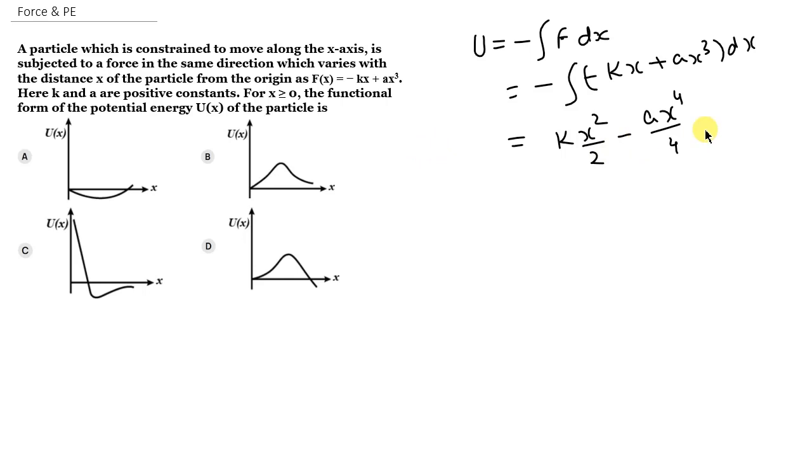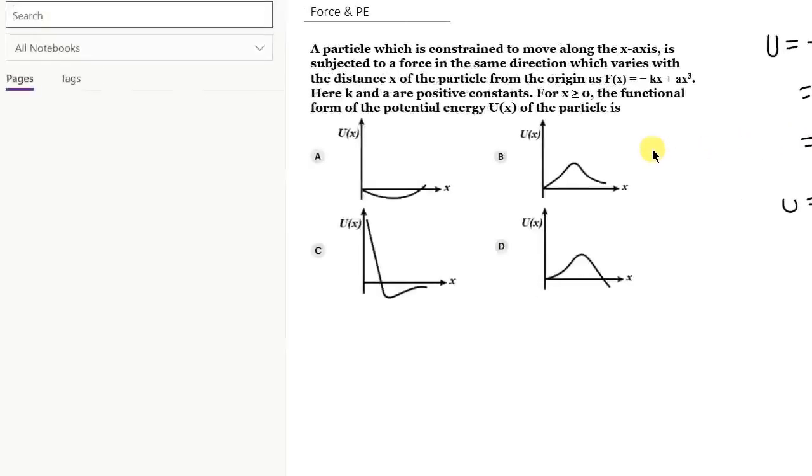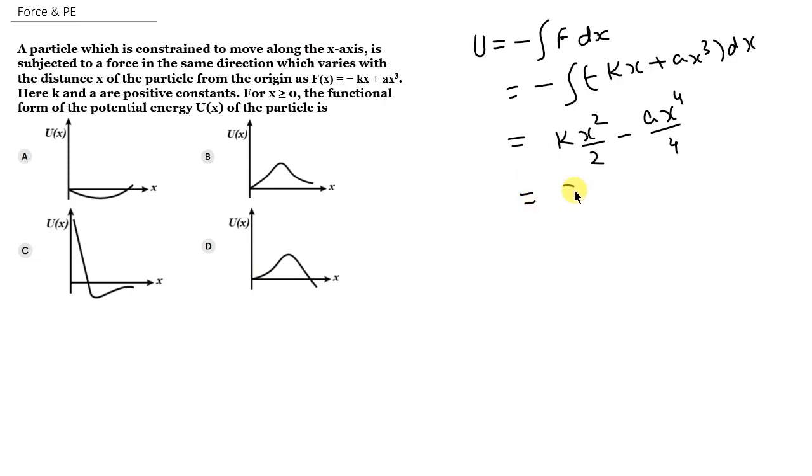Now if we look at the function, x equals zero gives zero. If we look at potential energy is zero, U equals zero. If we look at the graph, then we can simplify this as x squared by 4 times 2k minus ax squared.